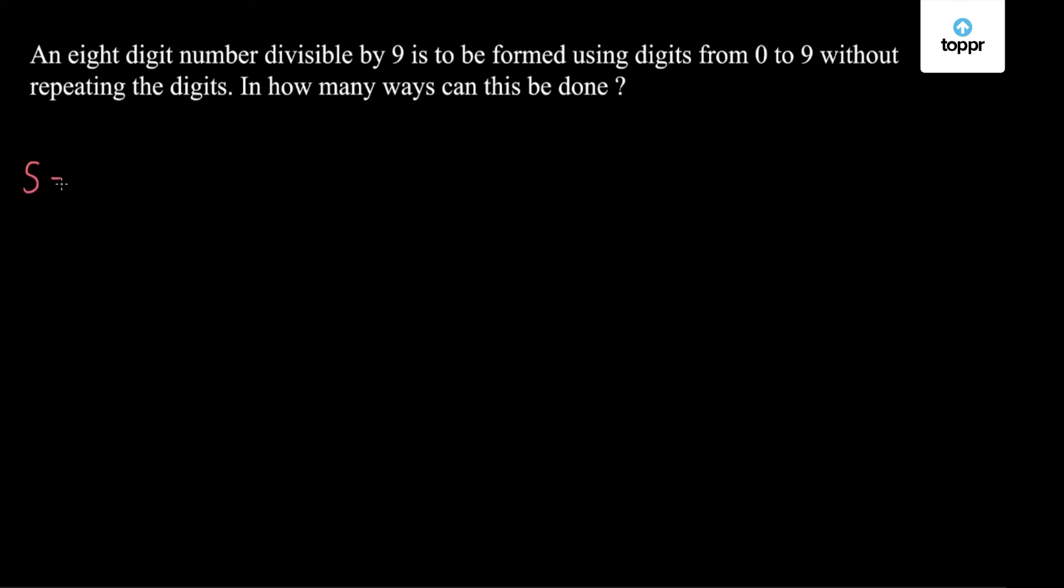So we have been given the digits 0 to 9, a total of 10 digits whose sum is 45, and we have to form an 8-digit number which is divisible by 9. The test of divisibility by 9 is that the sum of the digits of the number must be divisible by 9.